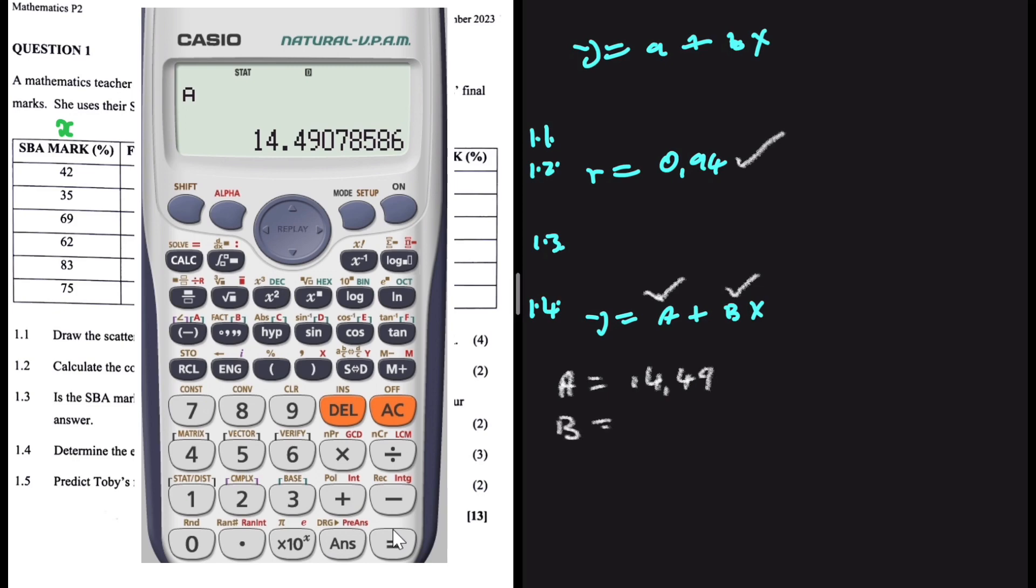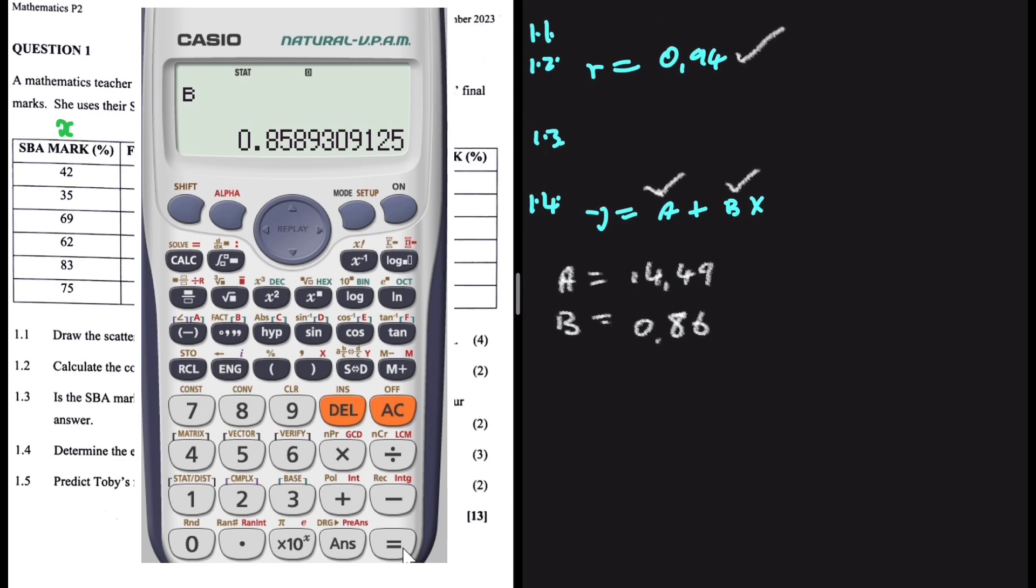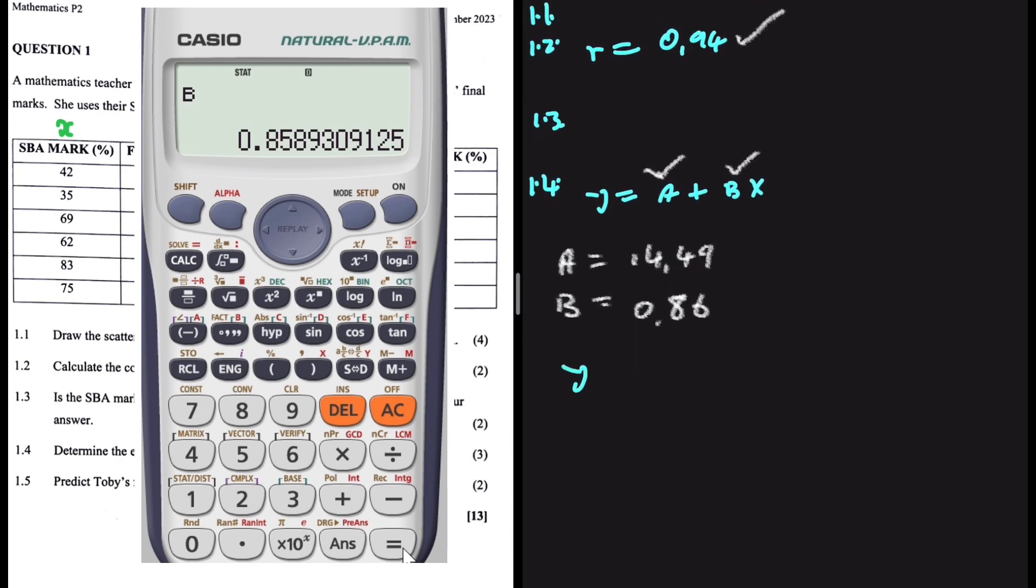Now we just need the value of B, and we have our equation for the regression line. AC, shift, 1, and 5, regression. I press 2, and we have our value of B. B is close to 0.86 if we round it off to two decimal places. So the equation Y is close to 14.49 plus 0.86 X. That is the answer to 1.4.